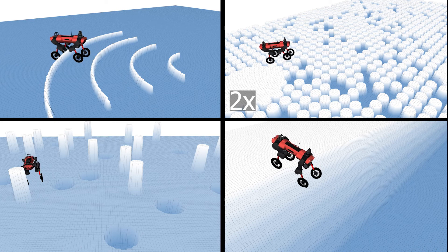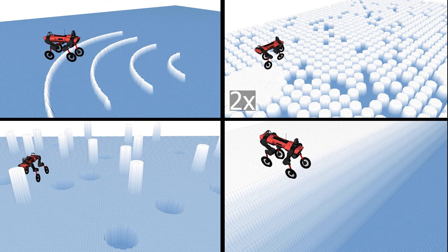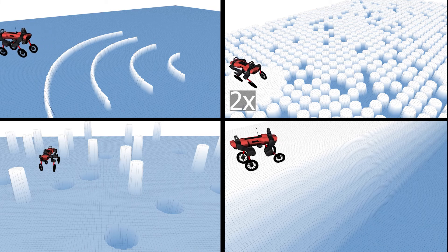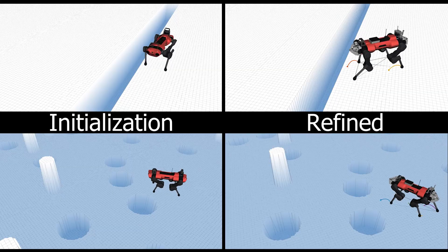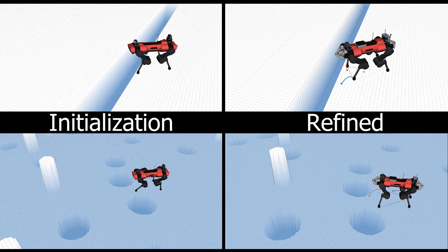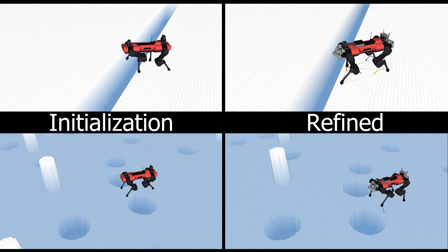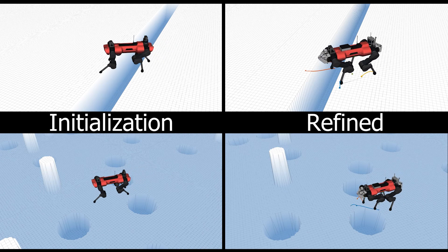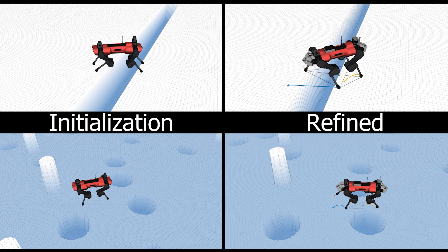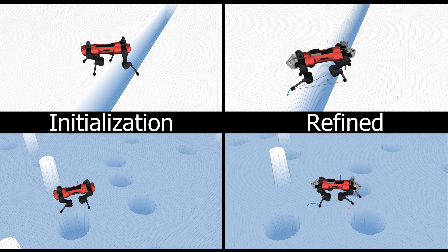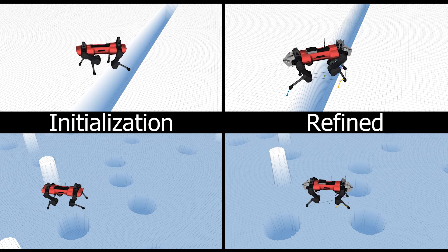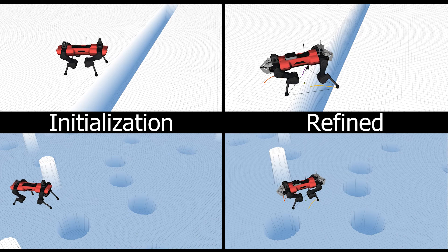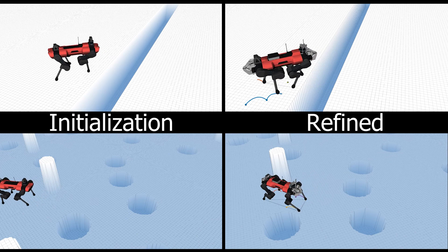Long-term motion plans can still contain non-physical motions. For example, long-term plans often violate the wheel rolling constraints. Hence, we refine the initial long-term motion plans using numerical optimization in the second stage. The optimization smoothens the motions and ensures constraint satisfaction. Refined motion plans can then be deployed on the hardware.